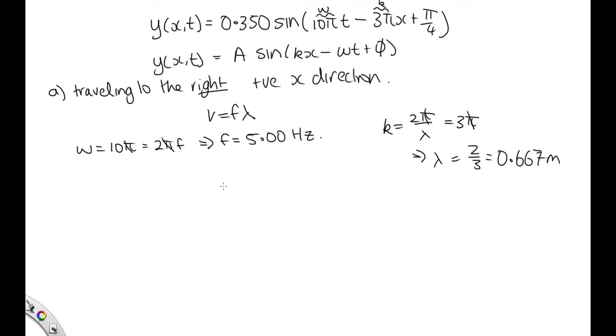Now to work out the velocity, v equals f lambda, so v equals 5.00 times 2 thirds. That is equal to 3 and 1 third, which is equal to 3.33 meters per second. So that's the answer to part A, to the right.